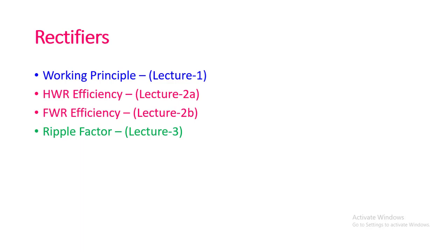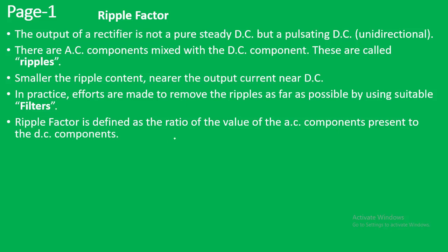Now what is the ripple factor? The output of the rectifier is not a pure DC. Pure DC is a straight line. But whatever we get at the output of the rectifier — for a half wave rectifier we get a certain kind of output, and for a full wave rectifier we get another kind of output.